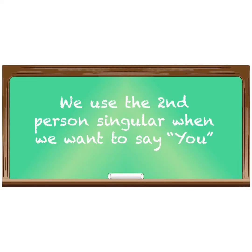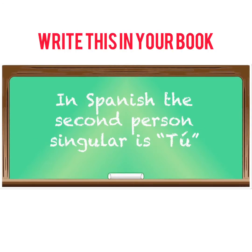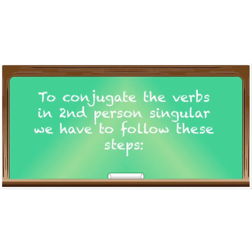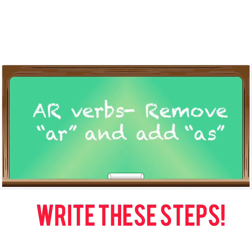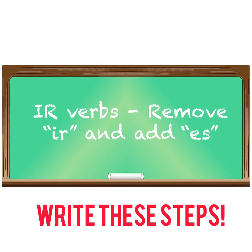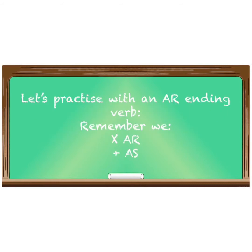We use the second person singular when we want to say 'you,' and in Spanish 'you' is 'tú' with an accent. To conjugate verbs in the second person singular: for -ar ending verbs, we remove the -ar then add -as; for -er ending verbs, we remove the -er then add -es; for -ir ending verbs, we remove the -ir then add -es.